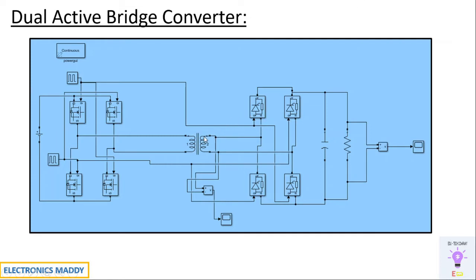Why do we need such a configuration? By suitably selecting the turns ratio of the transformer, you can increase or decrease the voltage. Secondly, the transformer provides electrical isolation between the input side and the output side — if there is any damage with respect to the load, it does not affect the source terminals. This circuit is also popularly used in vehicle-to-grid and grid-to-vehicle applications as a battery charging section, and it provides both DC and AC supply options.